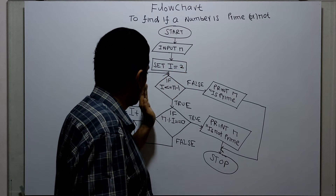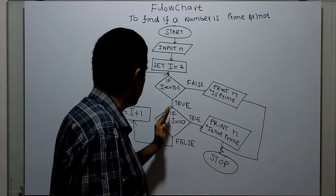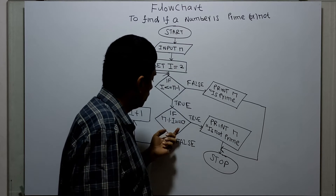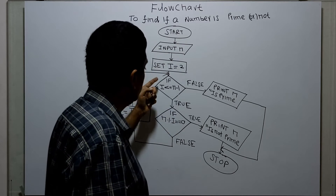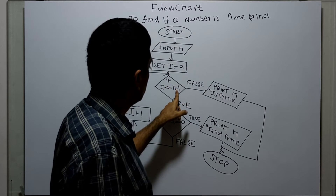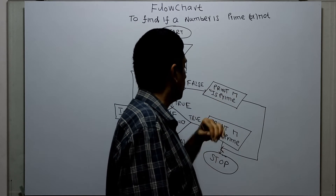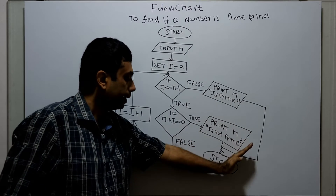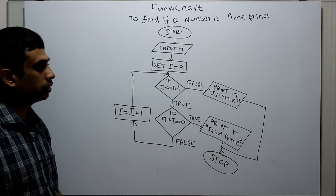A prime number is only fully divisible by itself and one. The loop goes from two to n minus one. If n is completely divisible by any i value between two and n minus one, the number is not prime. Otherwise, when i is greater than n minus one and the loop is over, the number is a prime number. I am connected back to the logical end of this flowchart. Now we will take a sample value and check how this flowchart works.